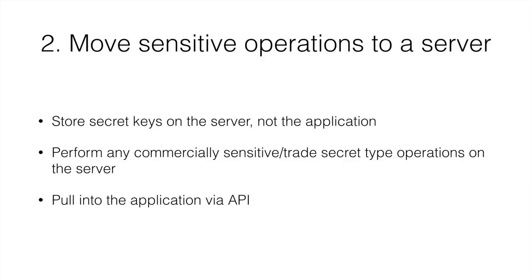If we can't do secure things in our application code, how do we do them? You can do that by moving any sensitive operations to a server. If you have secret API keys or commercially sensitive logic — maybe some patented code that performs a special operation — you can move that to a secured server and interact with it through an API. Rather than running that code directly on the device, you make a request to the server and it sends the result back.